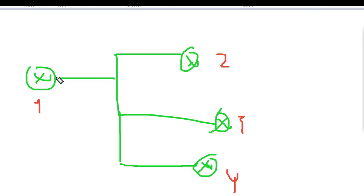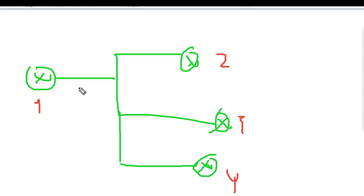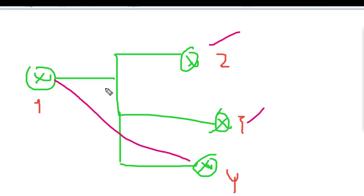So what is unicast? Unicast is one to one. For example, router one to router two, or router one to router three. If I want to send a packet from router one to router four, it goes directly there — router two and router three will not know about that packet. It's one to one: if you want to go to one specific device, just go to that device, nothing else.